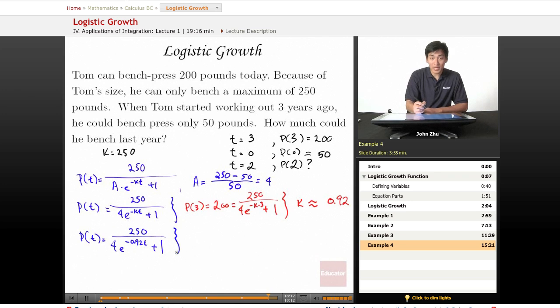So now that we have a completed model, we can go ahead and solve for t at 2. So p of 2 equals 250 divided by 4 times e to the negative 0.92 times 2 plus 1. And this equals, after we solve for it, 122 pounds.